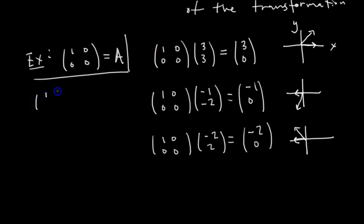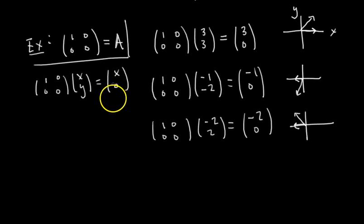So in general, if we have our matrix A, 1, 0, 0, 0, times some general vector X, Y, then as an output we get X and we get 0. So it doesn't matter what Y is, it always turns into 0. And X is unchanged. So this is called projecting onto the X axis.